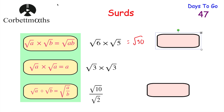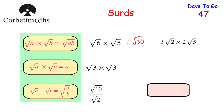That also works if you've got numbers in front of them. So for instance, if we had 3 root 2 multiplied by 2 root 5, we would do 3 times 2 to begin with, and 3 times 2 is equal to 6. Then we would do root 2 multiplied by root 5, which is root 10. So 3 root 2 times 2 root 5 equals 6 root 10. That's our rule for multiplying surds: root A times root B is root AB.